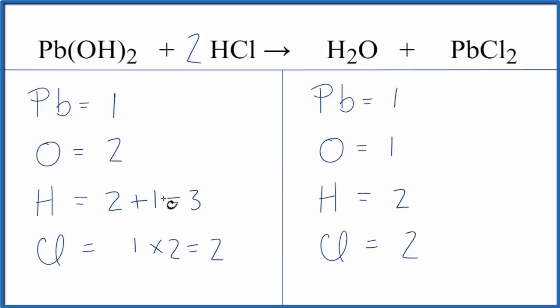Those are balanced, and then we need to update our hydrogens here. So we have the 2 times the 1, 2 hydrogens here, plus 1 times the 2, 2 hydrogens, so now we have 4 hydrogens.